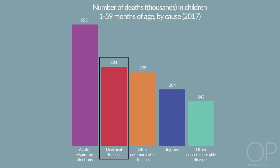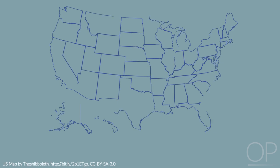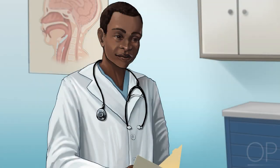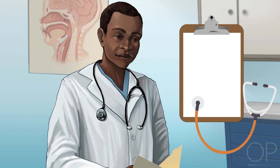Worldwide, diarrhea is the second leading cause of death in children under the age of 5, and in the U.S. accounts for more than 1.5 million outpatient visits and 200,000 hospitalizations each year. Diarrhea is one of the most common chief complaints pediatricians confront, and there are many causes of it. Most episodes are acute and can be managed in the outpatient setting, but signs of dehydration and specific history and physical exam findings may warrant a more nuanced approach.